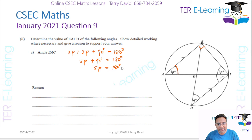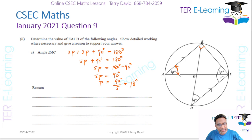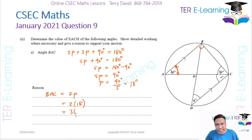So 2p plus 3p is 5p, and 5p plus 90 degrees equals 180 degrees. Therefore 5p equals 90 degrees, so p equals 90 over 5, which gives 18 degrees. The question wants angle BAC which equals 2p, so that's 2 multiplied by 18, which gives 36 degrees.